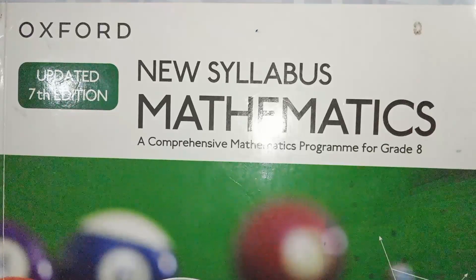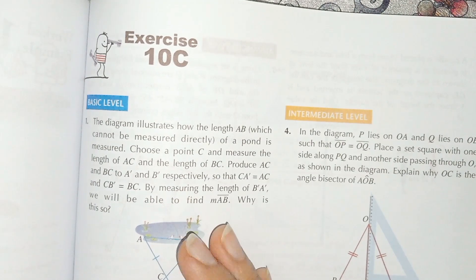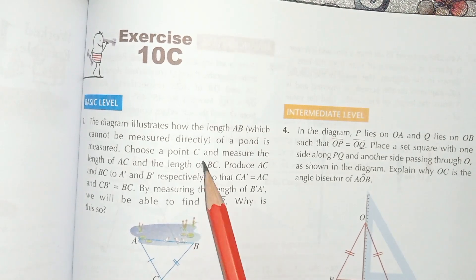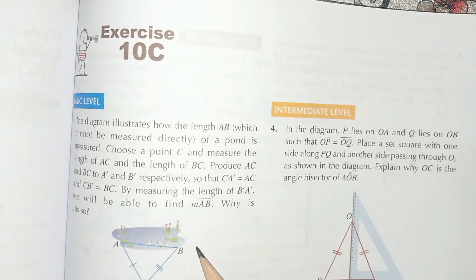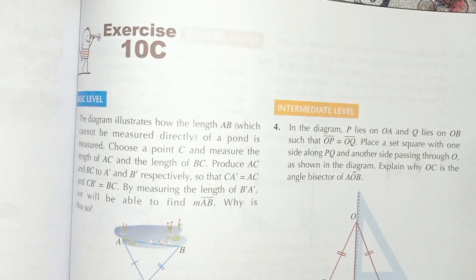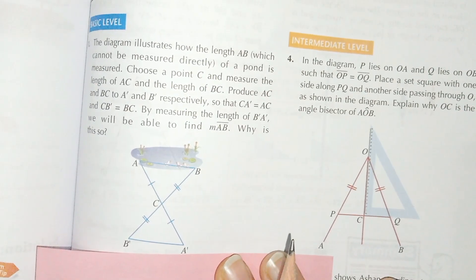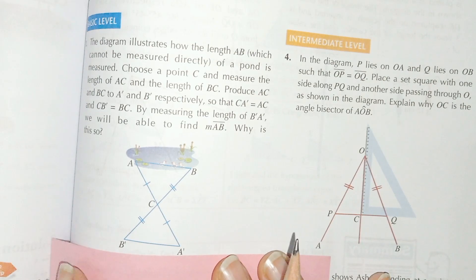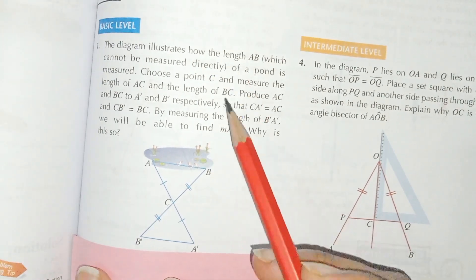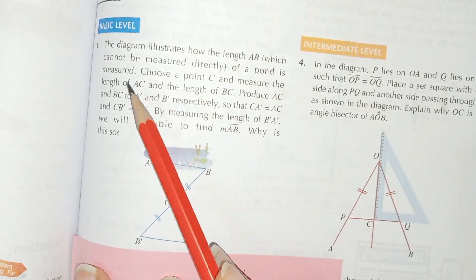Let's start. This is Exercise 10C, question number one. The diagram illustrates how the length AB, which cannot be measured directly — this is the length AB of a pond. These questions are very simple; we only have to understand the concept and then we can solve them very easily.